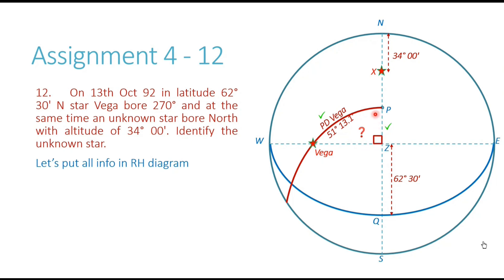I will apply Napier's rule in this triangle to find angle P. Using the two known sides, I find angle P — and this angle P is basically the LHA of star Vega. It is the angle at the pole contained between the observer's meridian and the meridian of a particular star. Now, looking carefully at the diagram, star X is on the inferior meridian — P to N is the inferior meridian of the observer. Anybody on the inferior meridian has an LHA of 180 degrees. So the LHA of the unknown star is 180.